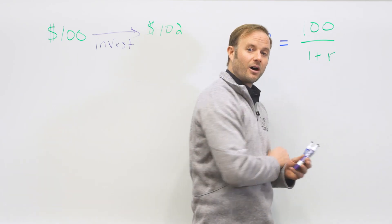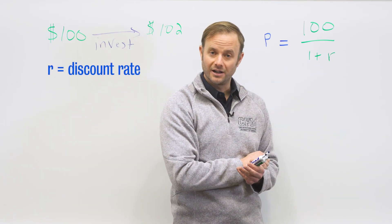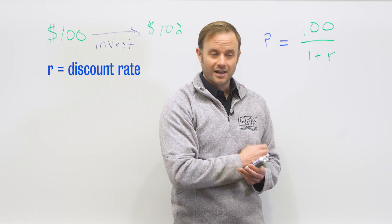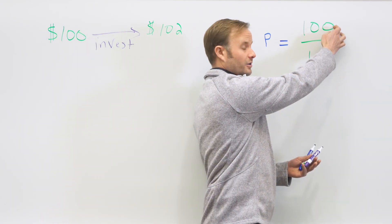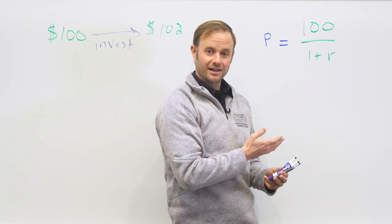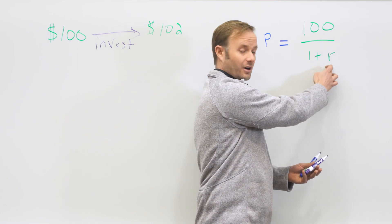I'm going to use this variable r to represent what we call a discount rate. If I want to bring $100 back to today, I'm going to divide by 1 plus r.